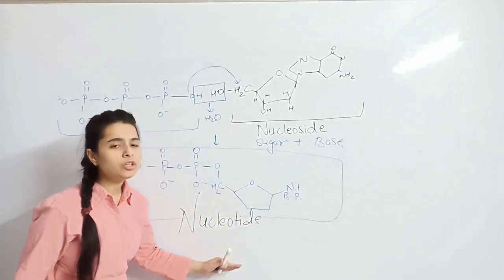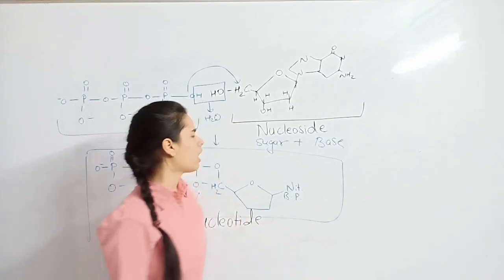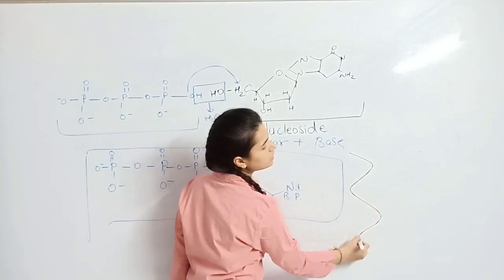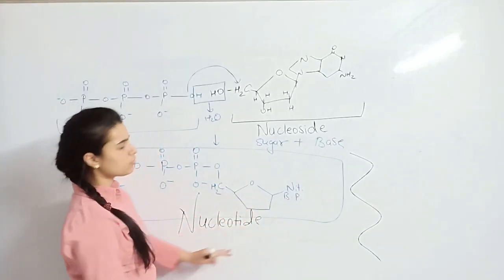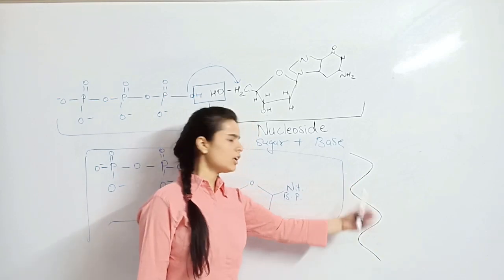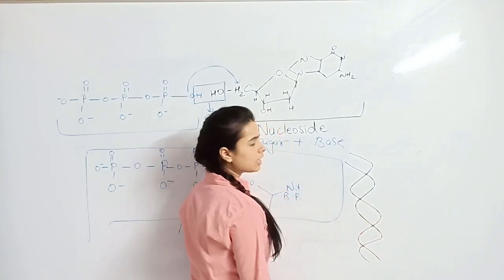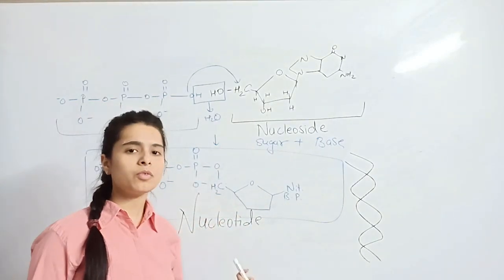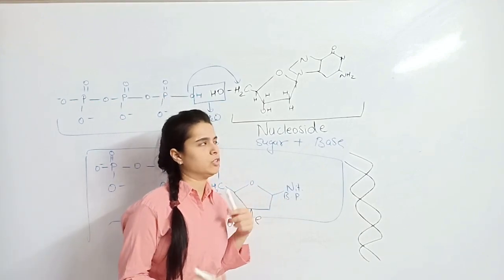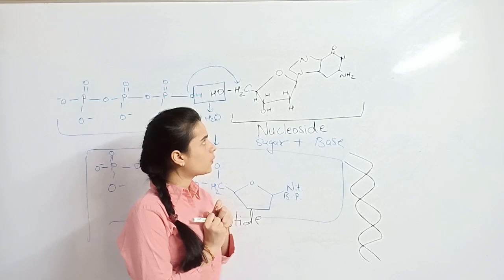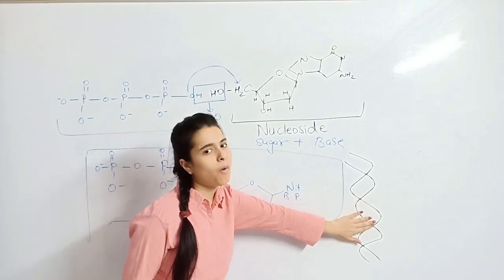A sequence of nucleotides in a chain forms a single strand of DNA. Remember, DNA has a double helical structure, so the stacking of nucleotide chains forms one single strand, and a second chain forms the double helical structure. This is the end of part one. To understand how the double helical structure forms, move on to part two of the video.